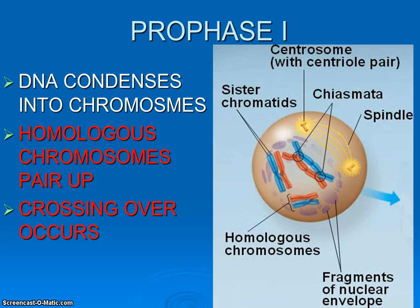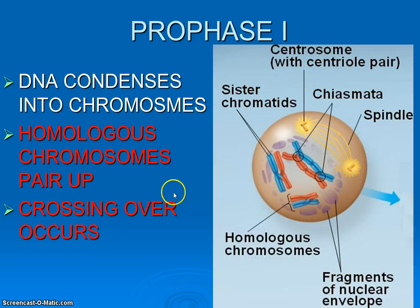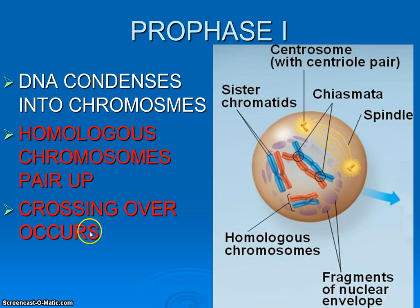So the logical place to start is prophase — notice it's prophase 1, because we actually will have two prophases. Our DNA, just as in mitosis, condenses into chromosomes. That's just like mitosis. But in prophase 1 of meiosis, what are called homologous chromosomes pair up and crossing over occurs. What the heck does that mean?